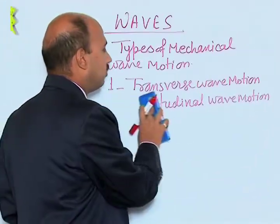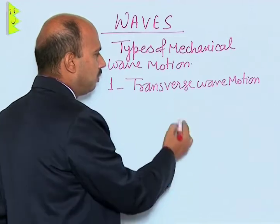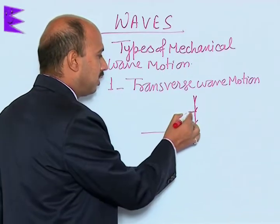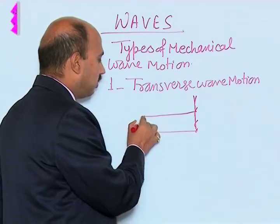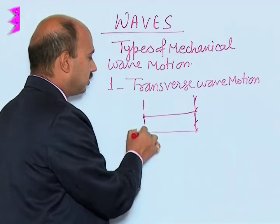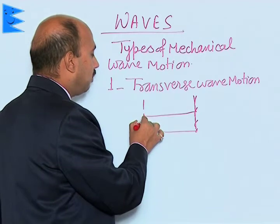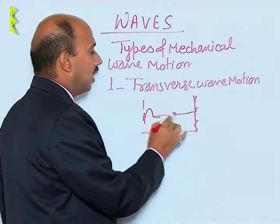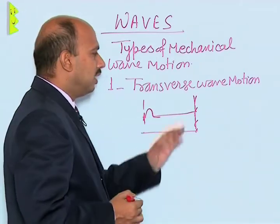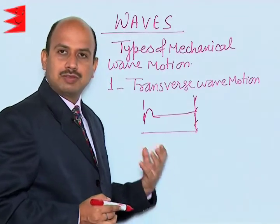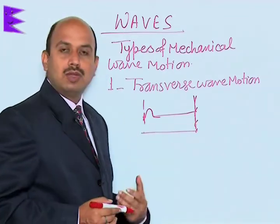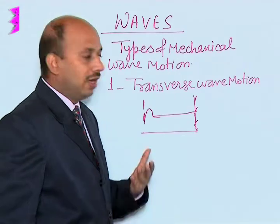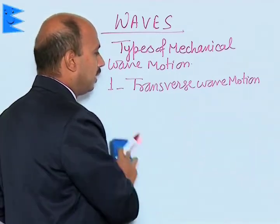Let us discuss transverse wave motion first. Suppose you have a support and a string attached to it with the other end free. Hold it with your hand and give a single up-and-down jerk. You will see a wave set up that travels in one direction — we assume the other end is very far so no reflection takes place. This type of wave, moving as a single pulse, is known as a transverse wave.